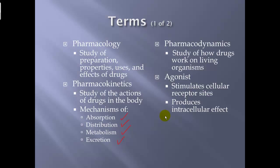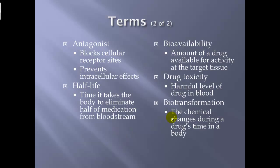An agonist stimulates cellular receptor sites and produces intercellular effects. An agonist is almost synonymous with a stimulant — whenever we say we have a sympathetic agonist, that means we're going to stimulate the sympathetic nervous system. An antagonist blocks cellular receptor sites and prevents intercellular effects; it goes against what the target tissue is trying to do, blocking its actions. Half-life is the time it takes the body to eliminate half of the medication from the bloodstream.